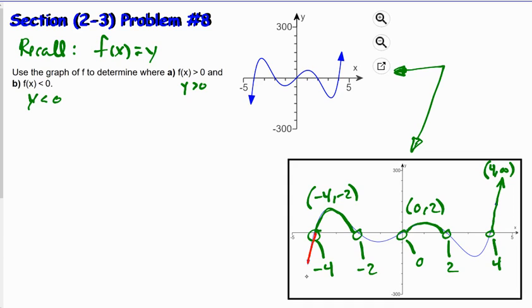The parts of the graph that are less than 0, I'll trace in red. We see that occurs from negative infinity to negative 4, then again from negative 2 to 0, and then a third time from 2 to 4.